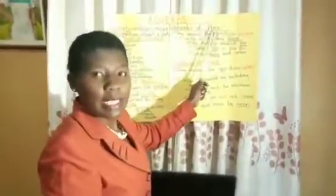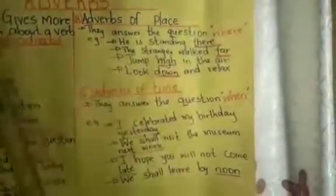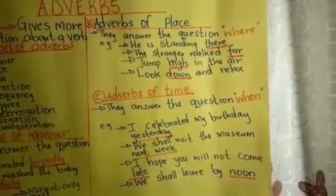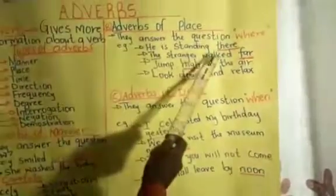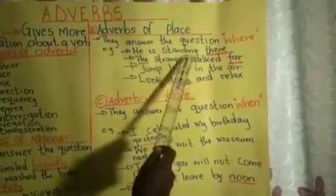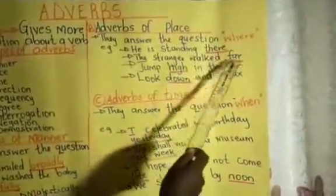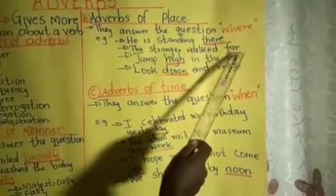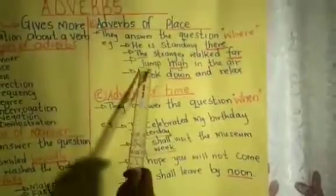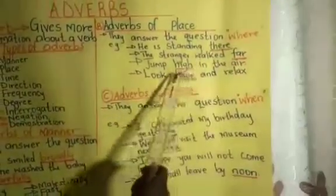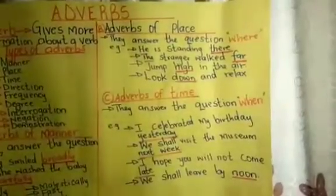Adverbs of place answer the question: where? Where did something happen? Where did an action take place? For example, he is standing — where? There. The action is standing, but where is he standing? There. This is an adverb of place. The stranger walked far. 'Far' is an example of an adverb of place. Jump high in the air — 'high' is the adverb of place.